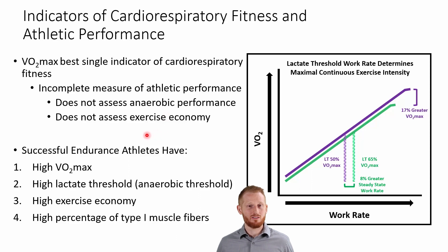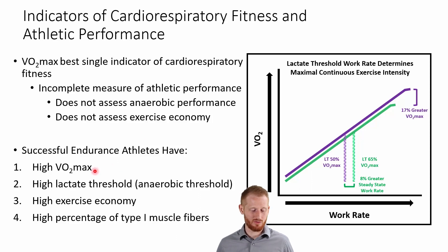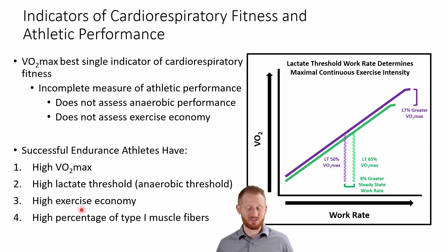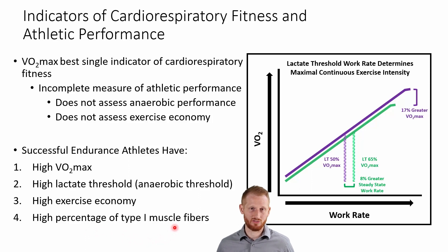VO2 max also does not take into account exercise economy. A good endurance athlete will have a high VO2 max, a high anaerobic or lactate threshold, and high exercise economy — meaning they're efficient at performing the activity without wasting energy on extra movements. Additionally, endurance athletes benefit from having a high percentage of type one slow-twitch muscle fibers.